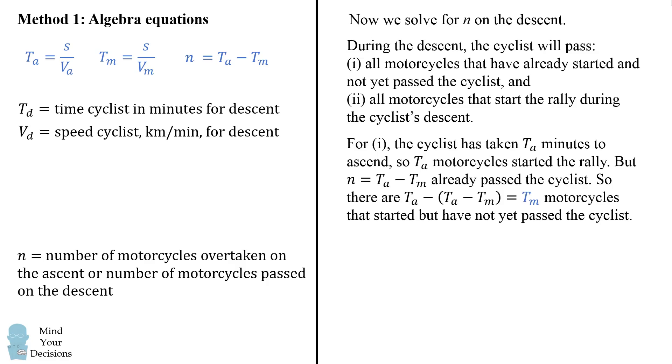For the first case, notice the cyclist has taken ta minutes to ascend, so ta motorcycles started the rally during the cyclist's ascent. But n of these, which equals ta minus tm, have already passed the cyclist. So there will be ta minus the quantity ta minus tm, which simplifies to be tm motorcycles that have started but not yet passed the cyclist.